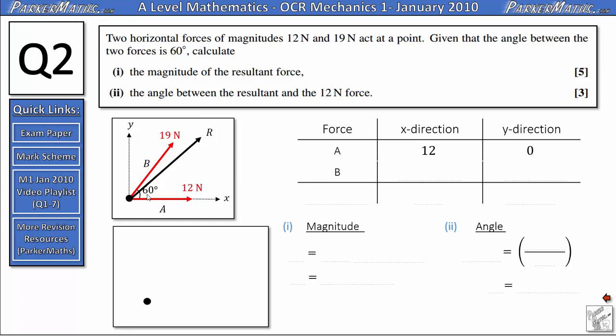Force B is at an angle of 60 degrees to the x direction. So, the component of the 19 Newton force going along in the x direction is 19 cos 60. In the y direction, as the angle is not included here, it's going to be 19 sin 60.